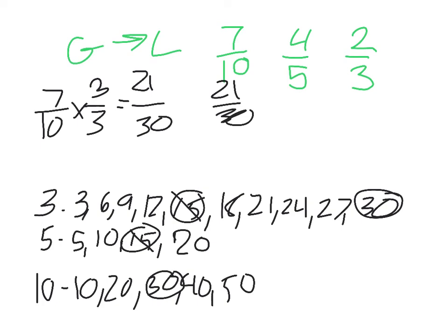Now, four-fifths times something equals something over thirty. I know five times six will give me thirty. Make that six-sixths. So, that would give me twenty-four over thirty.